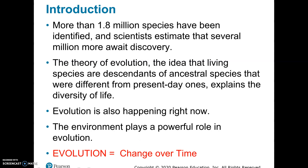To introduce our chapter, let's first define what we mean by evolution. Evolution just means changes over time. We believe that species change over time — that's really the crux of the theory. There are ancestral species that no longer exist. We see them in fossils, but we can see that there are species today that evolved from those ancestral species, maybe took their place. We know that there are over 1.8 million species on the planet.